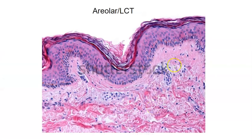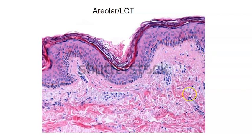Here's some more areolar or loose connective tissue right deep to the skin. This is the epithelium of the skin, and right deep to it is this light pink loose connective tissue. Deeper still, this is a different type — dense connective tissue, which we'll look at next. Notice the cells are far apart and we see some fibers, but not real thick ones.